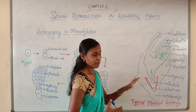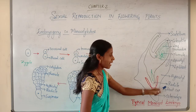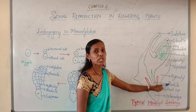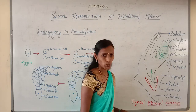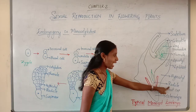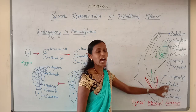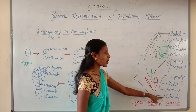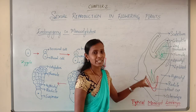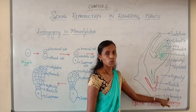The embryonal axis at its lower end comprises the radicle and root cap. The radicle is the future root and the plumule is the future shoot. Both the radicle and root cap are enclosed in an undifferentiated sheath called the coleorhiza.